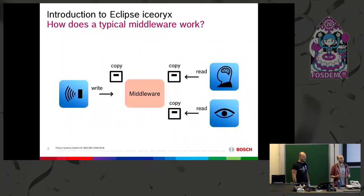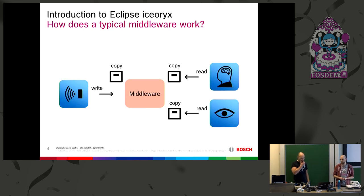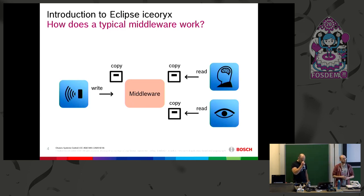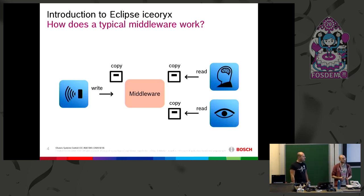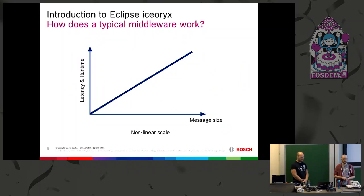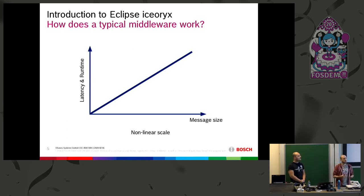How does a typical middleware like the one used in ROS work? We have a publisher — a radar app — sending data to two subscribers, two algorithmic apps. A typical middleware, after the data is written, copies it to internal buffers, and then does further copies for every subscriber. If you plot this, you see that with increasing message size you get increased latency. Now imagine sending a 4K video stream — you really have a problem.